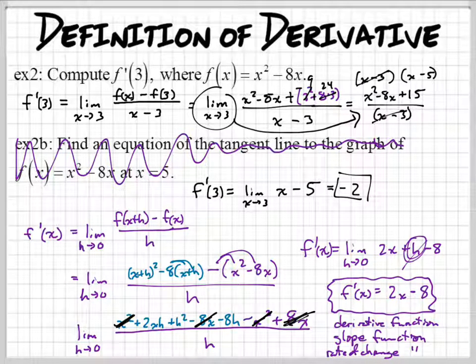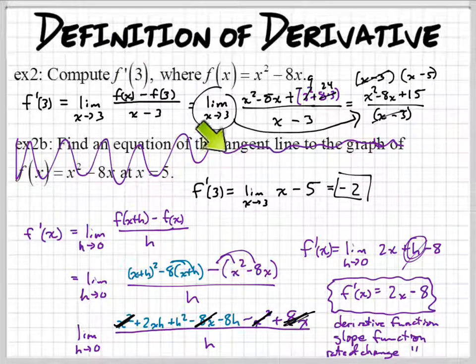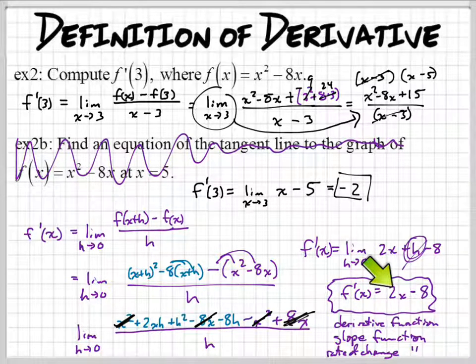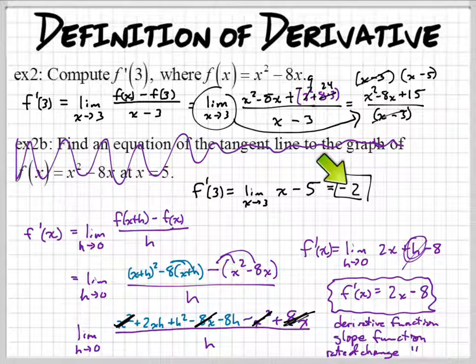So now, after you find the function, if you wanted to find f prime of 3, you just have to take that 3 and plug it in. So 2 times 3 is 6 minus 8 is negative 2. So it gives us the same result.